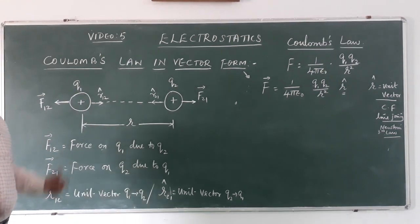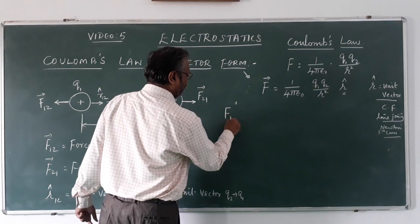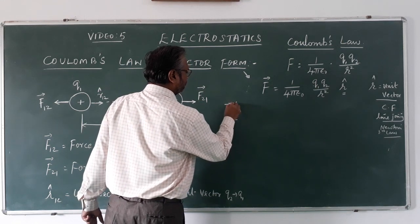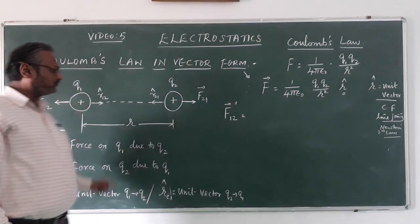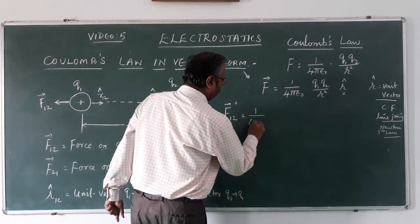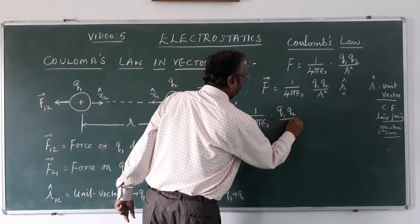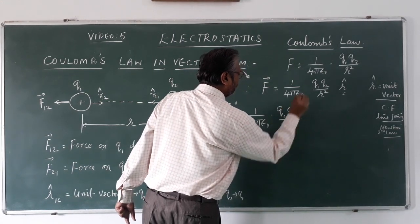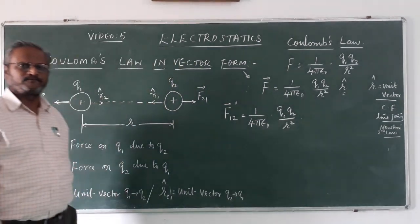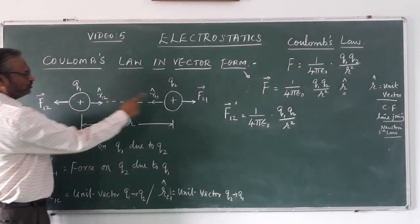Now let us derive an equation and prove that. Force on the first charge due to second charge, F₁₂, is equal to 1 upon 4πε₀ into q₁q₂ upon r². Now what about the unit vector?